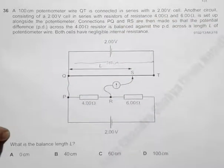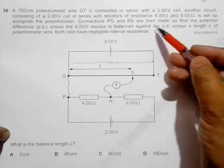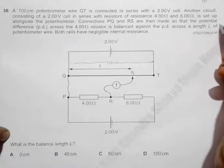Connections PQ and RS are then made so that the potential difference across the 4 ohm resistor is balanced across this PD.